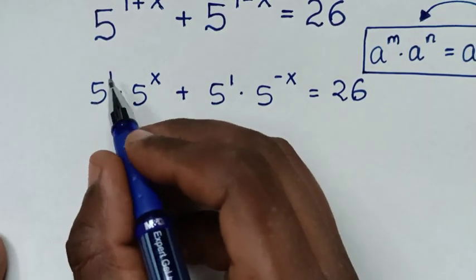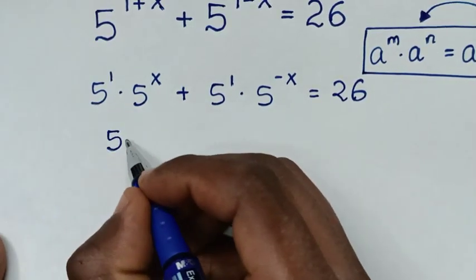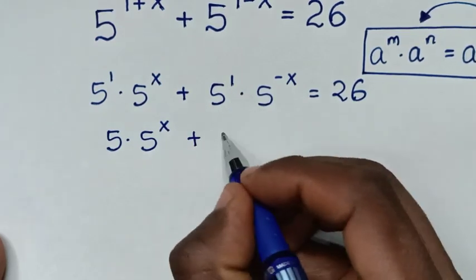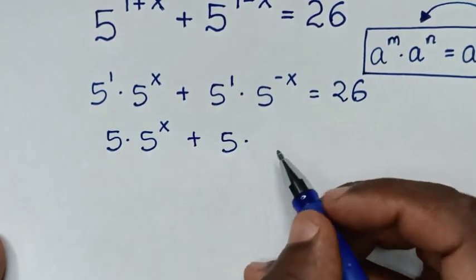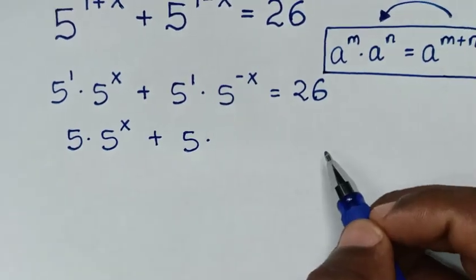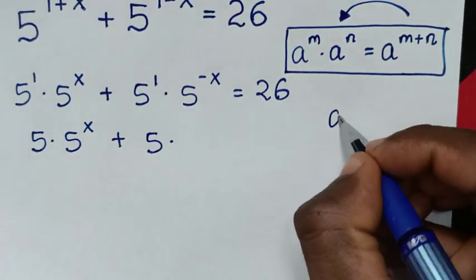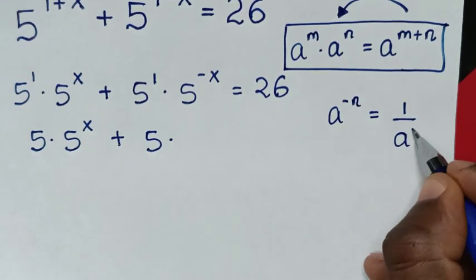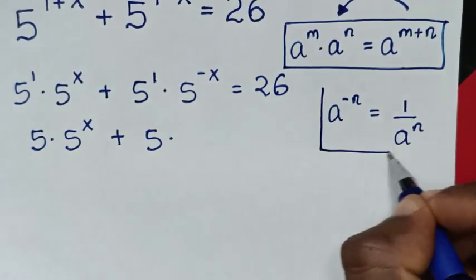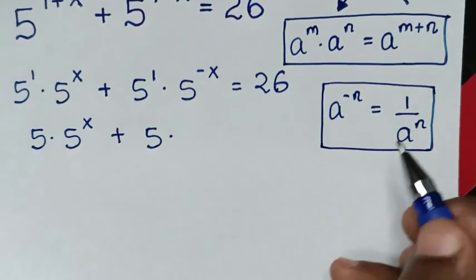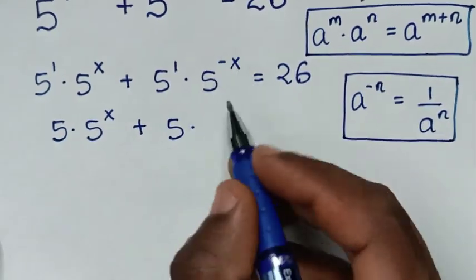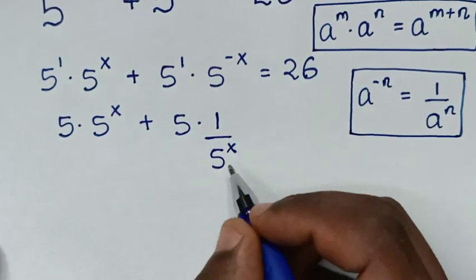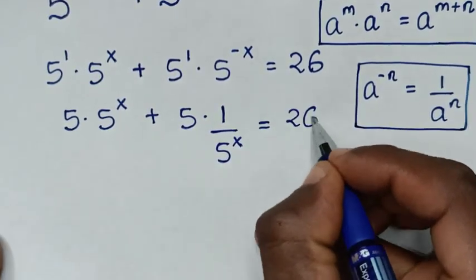In the next step, 5 power 1 is the same as 5, so we have 5 times 5 power x plus 5 times 5 power negative x. We apply the exponential rule: a power negative n is equal to 1 over a power n. So 5 power negative x becomes 1 over 5 power x, and the equation equals 26.